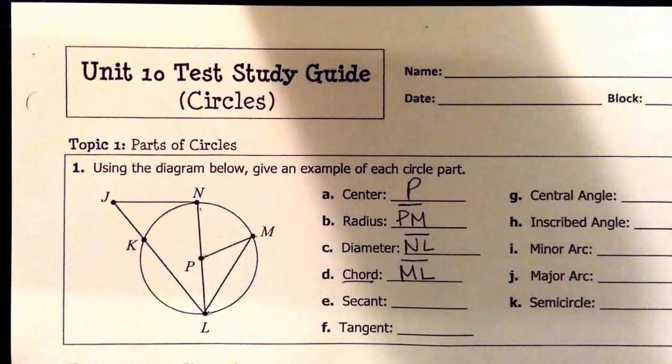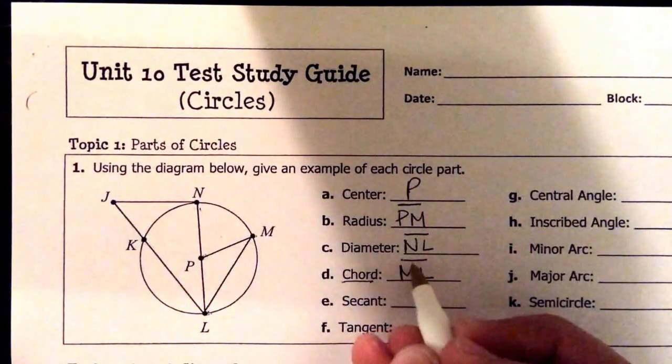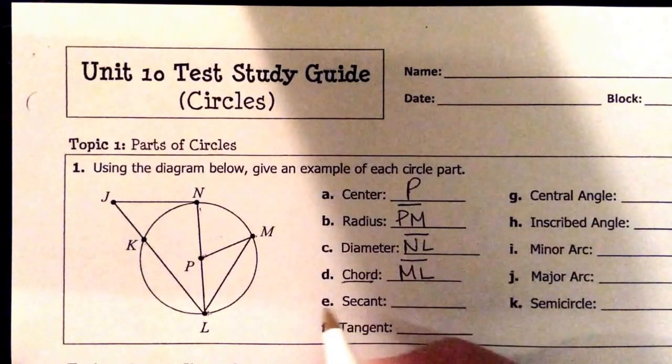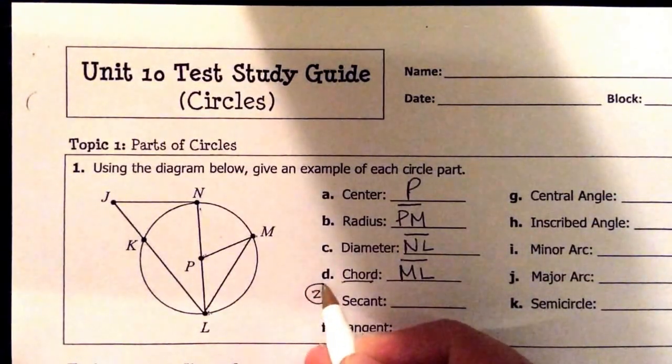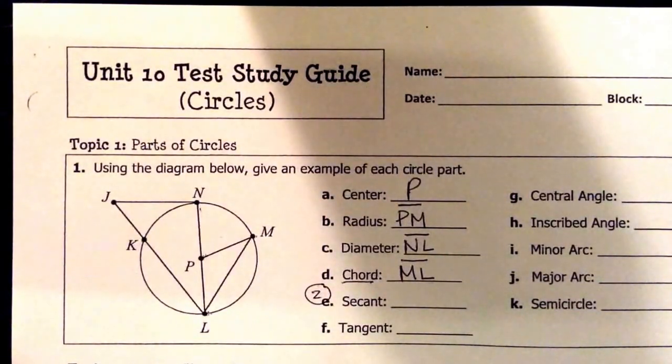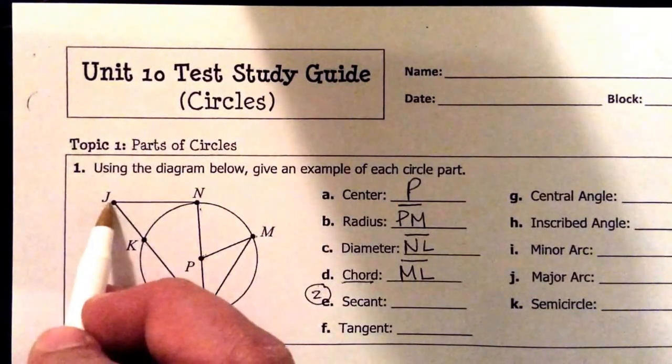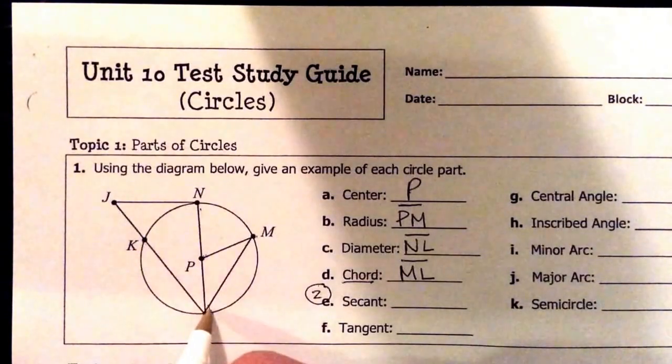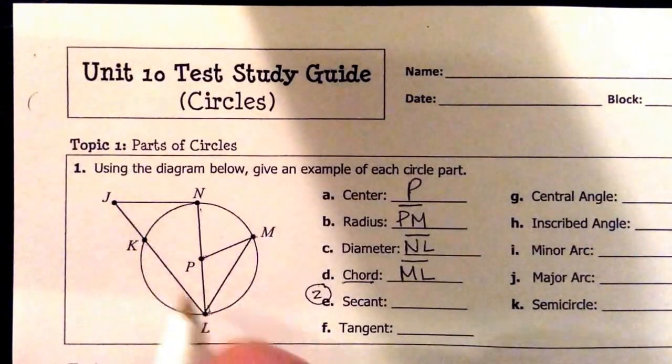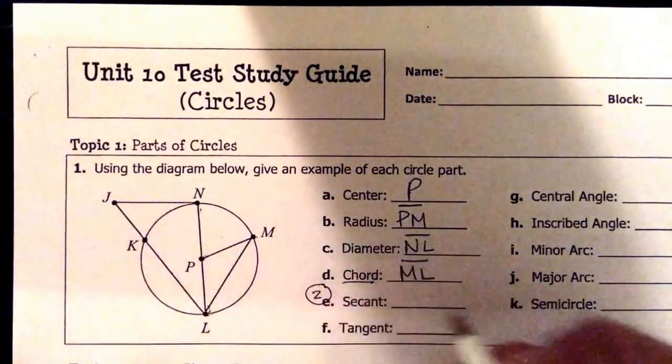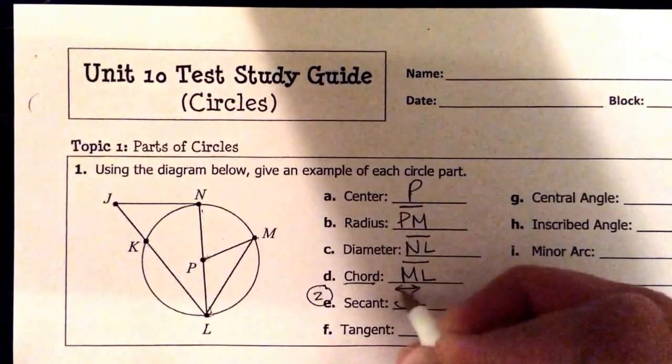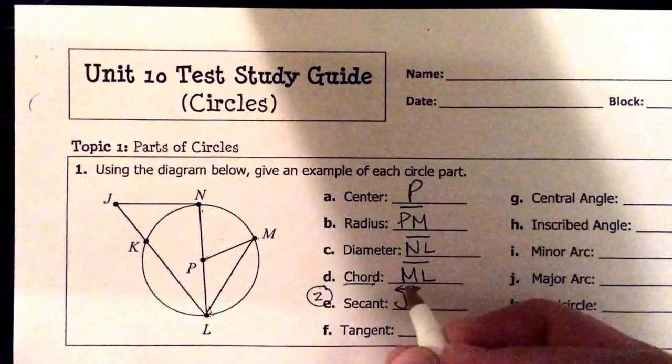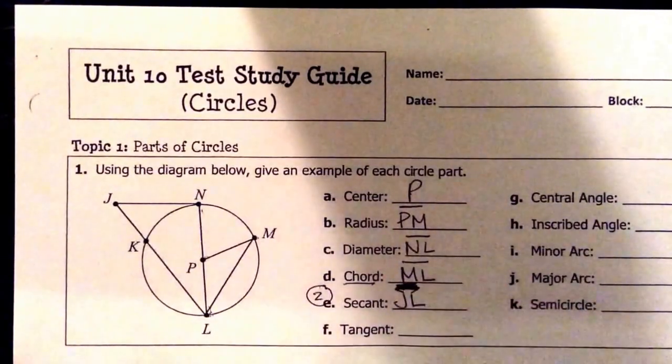A secant is a little bit different than a chord. A chord is a segment. A secant is a line. So a secant goes outside the circle as well, but it touches in two spots. So we really only have one choice for a secant here. If you look at J to K to L, it's outside the circle, but then it touches twice at K and L. So I'm going to call that JL. Oh, but you know what? On this figure, it's actually a segment, not a line.